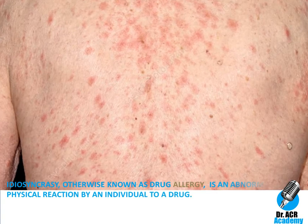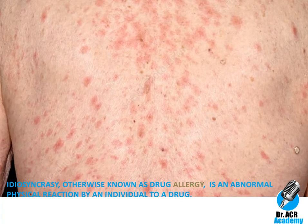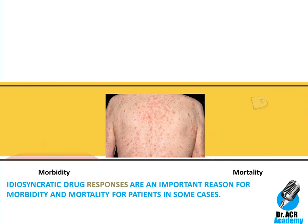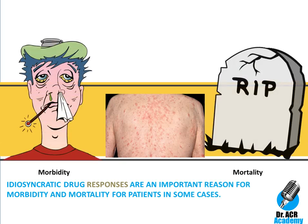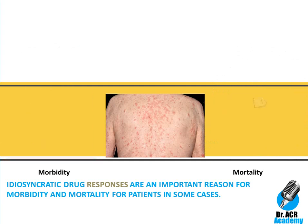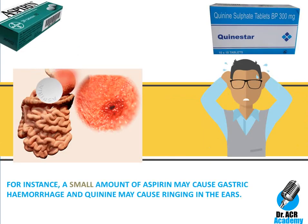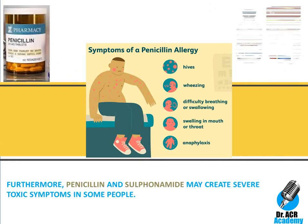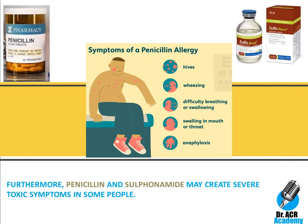Idiosyncrasy, otherwise known as drug allergy, is an abnormal physical reaction by an individual to a drug. Idiosyncratic drug responses are an important reason for morbidity and mortality in some cases. For instance, a small amount of aspirin may cause gastric hemorrhage and quinine may cause ringing in the ears. Furthermore, penicillin and sulfonamide may create severe toxic symptoms in some people.